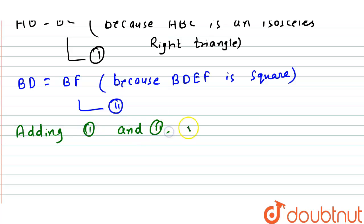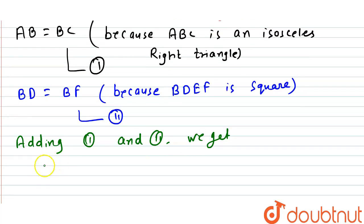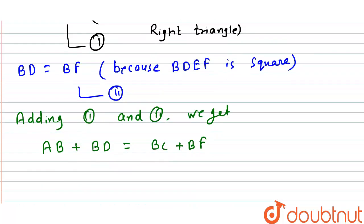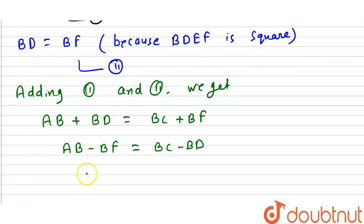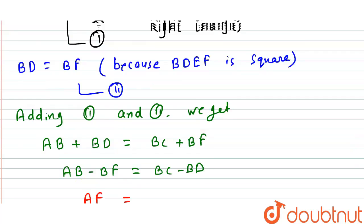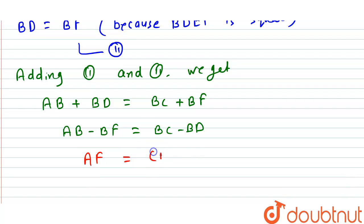Adding equations one and two, we get AB plus BD equals BC plus BF. Rearranging, AB minus BF equals BC minus BD, which gives us AF equals CD. This is our equation number three.